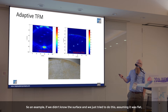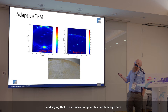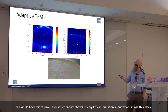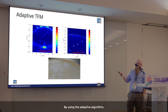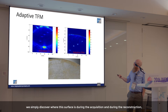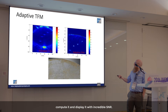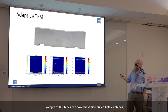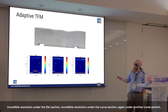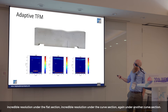As an example: if we didn't know the surface and just tried to do this assuming it was flat, using standard TFM, we would have a terrible reconstruction that shows very little information about what's inside the block. By using the adaptive algorithm, we simply discover where this surface is during acquisition and reconstruction, compute it, and display it with incredible SNR. We can see side drilled holes and notches with incredible resolution under the flat section and under the curved sections.